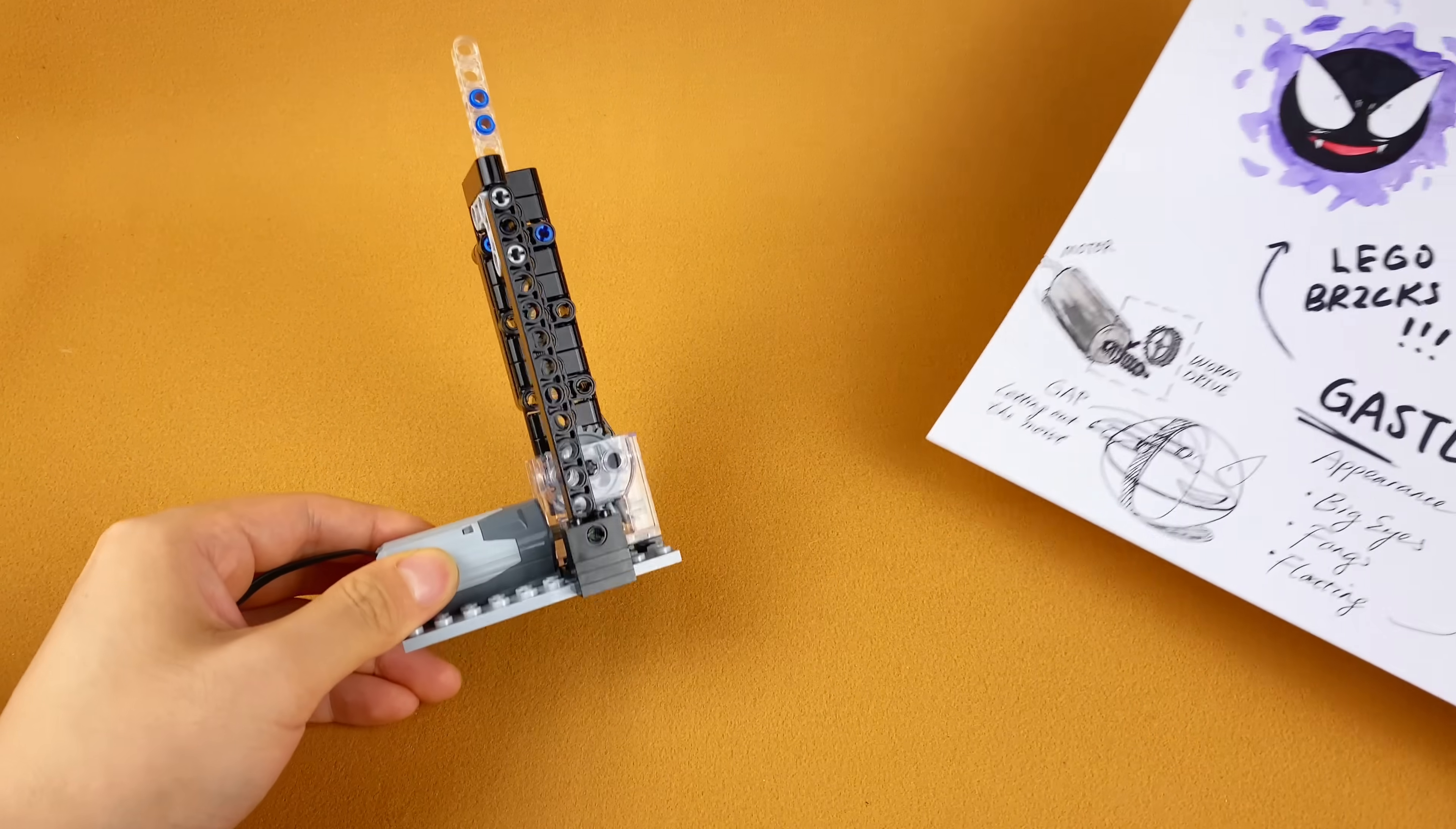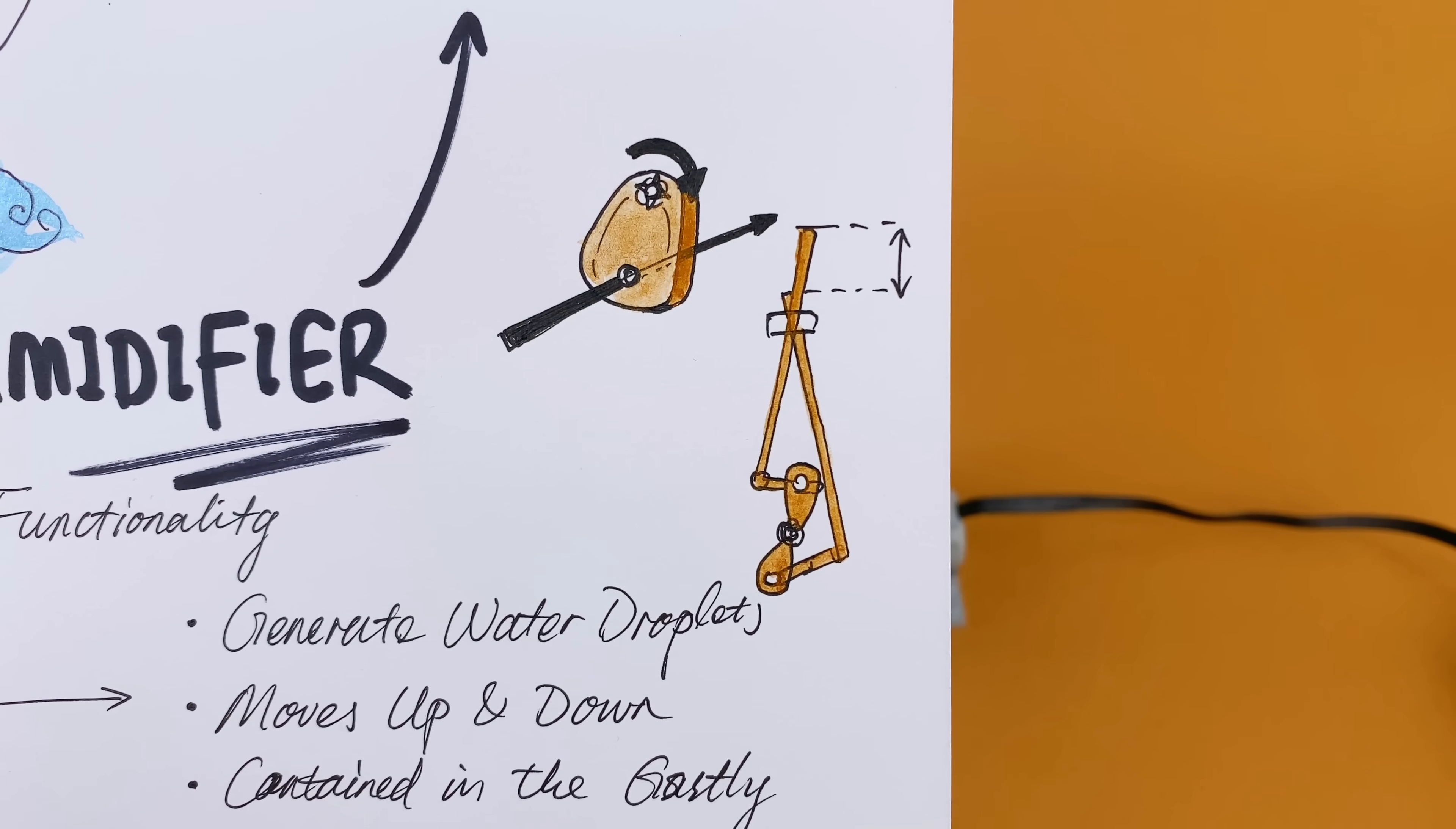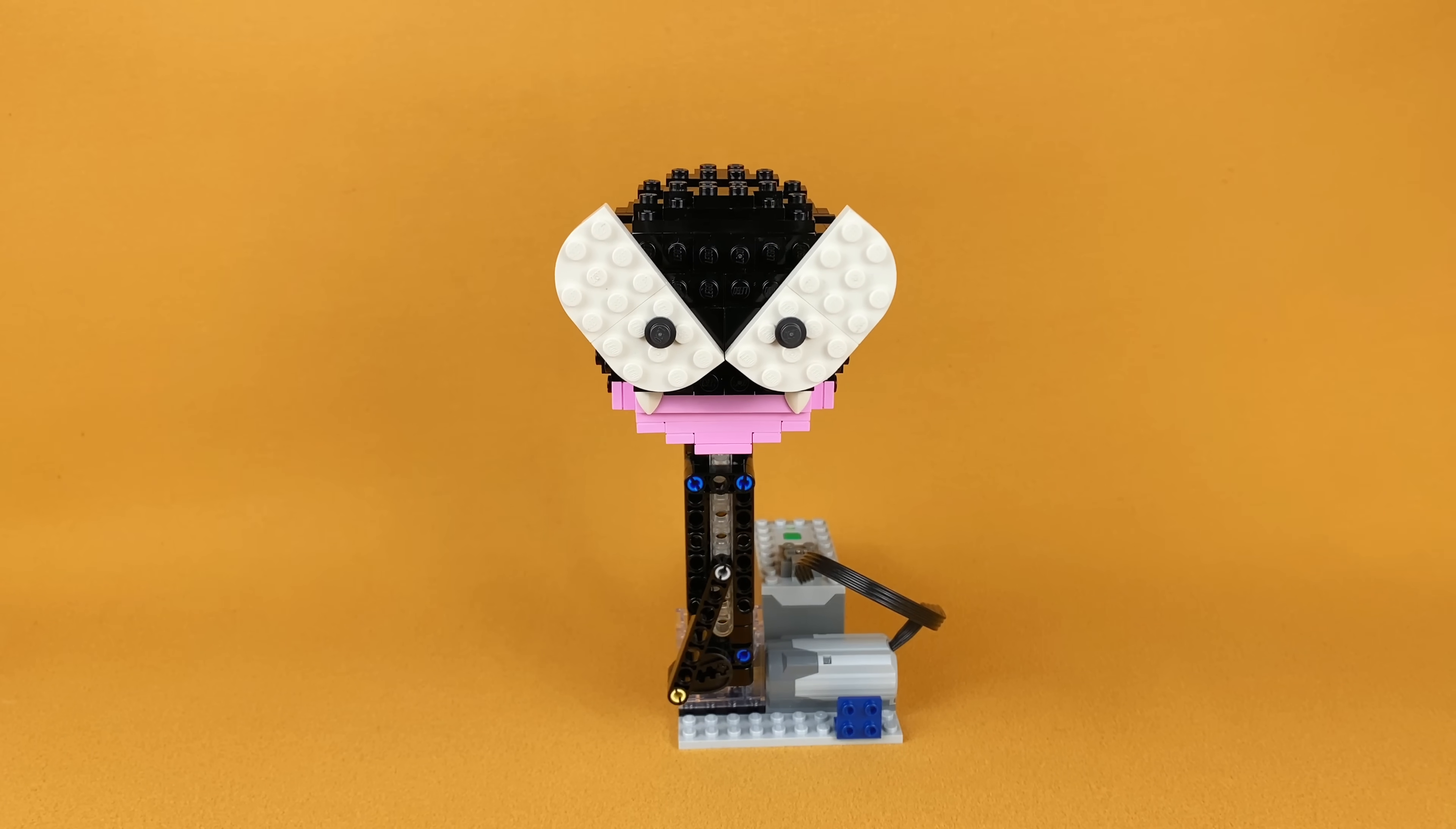As for Ghastly, my plan is to make it move up and down, just like it's floating in the air. I used a worm drive to slow the motor down, and I used a camshaft mechanism to make it move as I planned. Let's assemble the mechanism to the Ghastly sphere and test if it could hold the weight of these Lego bricks. Great, it looks fine for now.